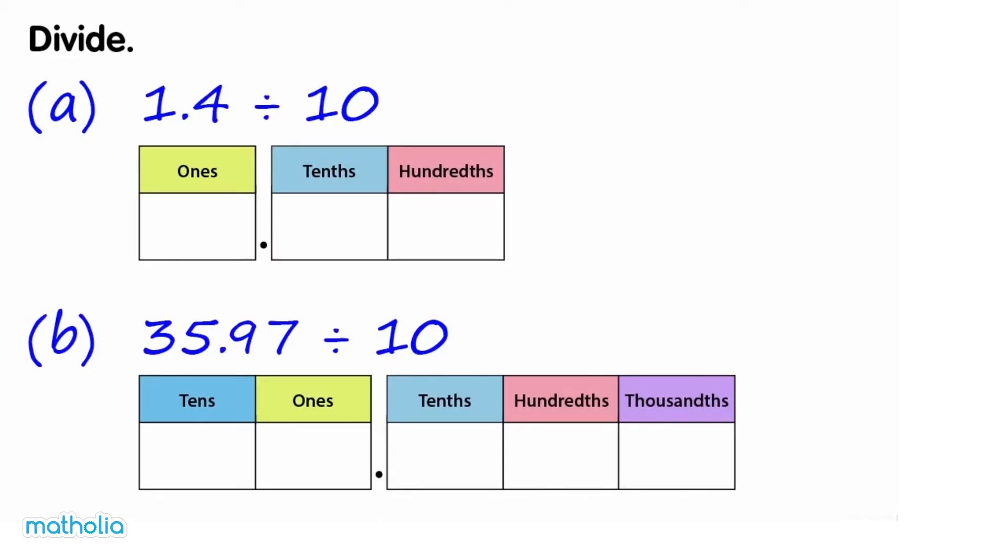Problem a: Divide 1.4 by 10. Write 1.4 in a place value chart. We can divide by 10 by shifting the digits one place to the right. 1.4 divided by 10 equals 0.14. Problem b: 35.97 divided by 10. Write 35.97 in a place